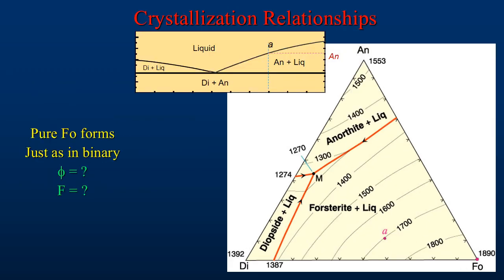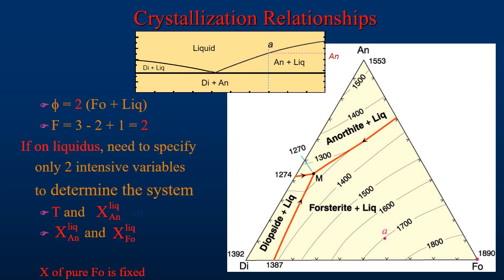Now let's use the phase rule to analyze the crystallization behavior of some melts in our ternary system. We begin with a composition of A on the diagram. When the system is above 1700 degrees centigrade, there is only one liquid phase present, and our degrees of freedom, or F, equals 3. At 1700 degrees centigrade, the first crystals of forsterite appear, adding an additional phase and changing our degrees of freedom from 3 to 2. Because the composition of pure forsterite is fixed, we still have the same variables to choose from as we did with our liquid-only situation, but now we have to determine a second intensive variable to determine the state of the system. As temperature decreases and forsterite is depleted, the composition of the liquid moves away from the forsterite corner of the diagram towards the cotectic line between diopside and forsterite.